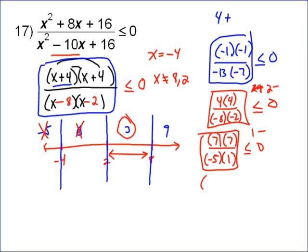Then we test 9. That's going to give you 13 times 13 over 1 times 7. Well, those are all positive, so you've got a positive number, which is not less than 0, so 9 doesn't work. So the only solution is between 2 and 8.